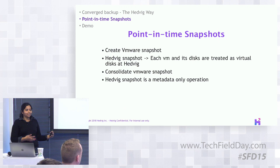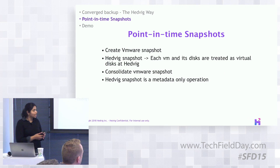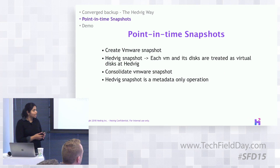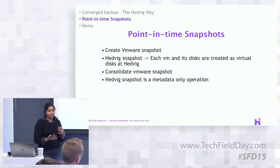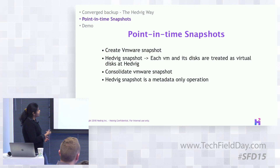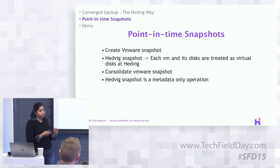There are three main processes involved when we take a Hedwig snapshot on virtual machines running on Hedwig datastores. The first step is the creation of the VMware snapshot. The second step is the creation of Hedwig snapshots — every virtual machine consists of a bunch of disks, and each disk translates to a virtual disk at Hedwig's end, so we take a snapshot of each individual virtual disk. The final step is consolidating the VMware snapshot we started with.